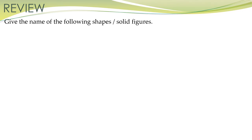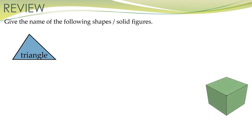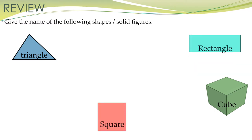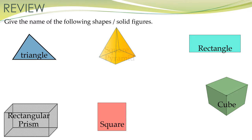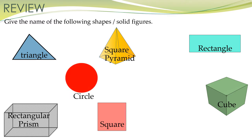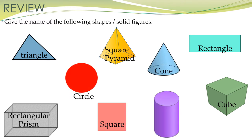Give the name of the following shapes or solid figures. First one, this is a triangle. This one is a cube. Then this is a square. This is a rectangle. And this one is a rectangular prism. And this one is a square pyramid. And then we have a circle, a cone, and a cylinder.